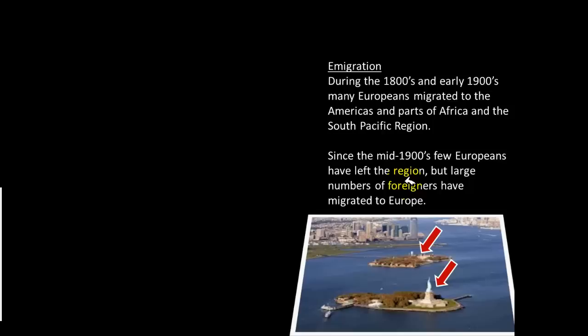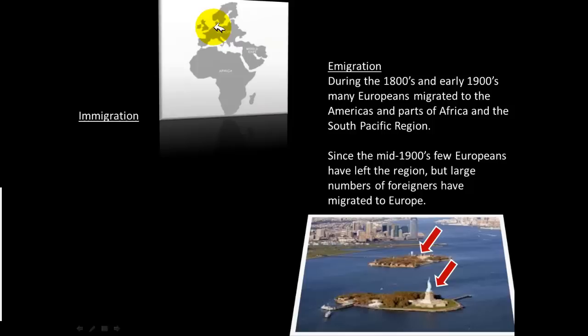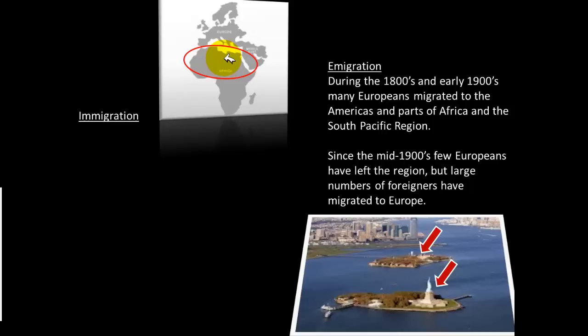Since the mid-1900s, few Europeans have left the region, but large numbers of foreigners have migrated to Europe. The map shows that the majority of recent immigrants — over the past 50 to 60 years — have come from North Africa and the Middle East. While Christianity is the dominant religion in Europe, the dominant religion among many of those immigrating to Europe is Islam, which has set the stage for some significant tensions.